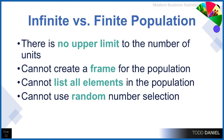What distinguishes an infinite from a finite population? With an infinite population, there's no upper limit to the number of units — the number of patients in the ICU, the number of items in the warehouse. Therefore, we can't create a frame of the population because we can't create a list of everyone who could possibly be in the ICU — it's continually changing. We cannot list all of the elements in the population, so we can't use random number selection, especially for people who are not yet in the population or people who were in the population but have moved on and are no longer there.